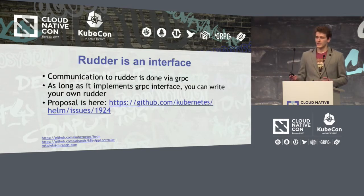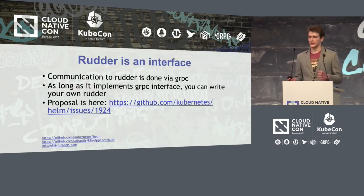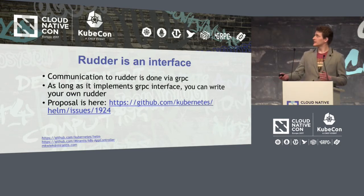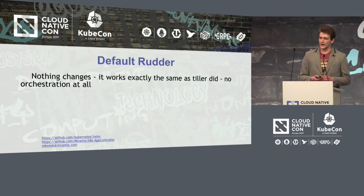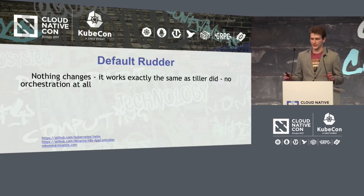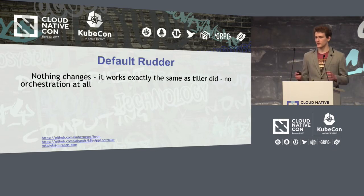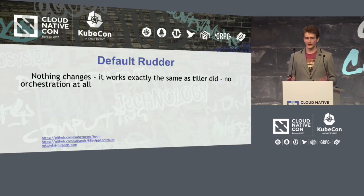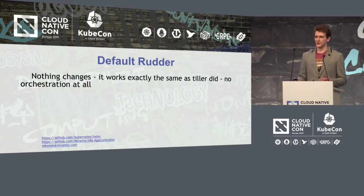Radar is an interface. Tiller — or anything else — communicates to it via gRPC, and as long as it implements the specified gRPC interface, you can write your own Radar. The proposal for it is linked in this presentation. We started off with a default, basic, native Radar where nothing changes functionally — the only difference is the architecture, which has additional pods with Radar running. This gives us a framework we can improve upon as a baseline for better orchestration.